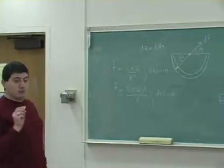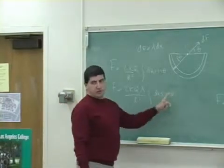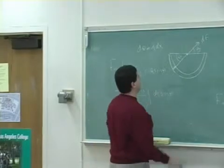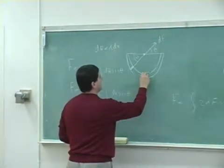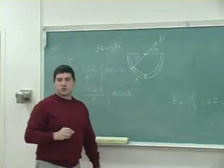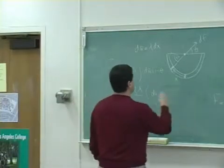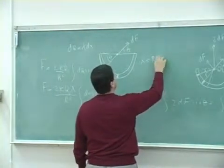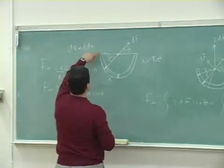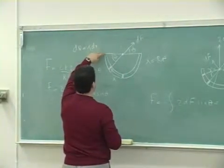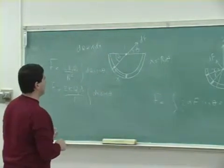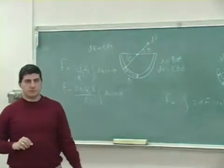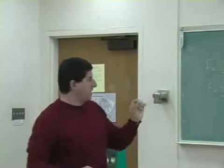We can't integrate with two different variables, so we need to relate x and θ. Here x is the arc length from the center to the piece, so x = r·θ, and therefore dx = r·dθ. The dx is the thickness of the little arc piece.